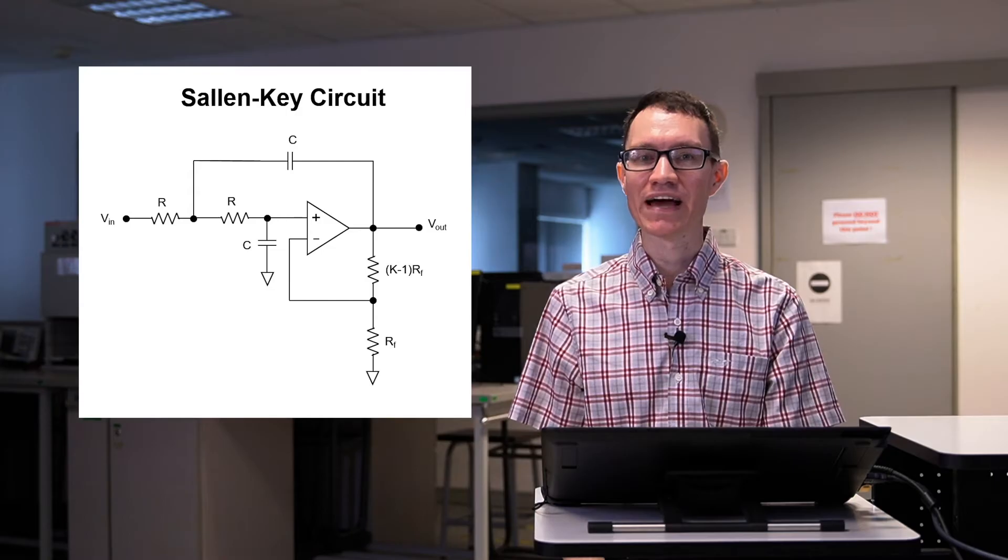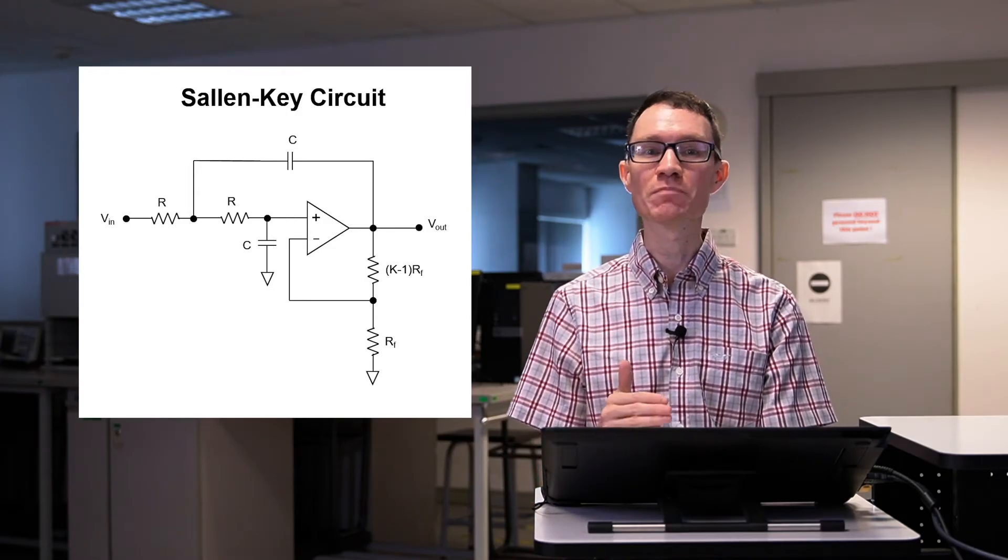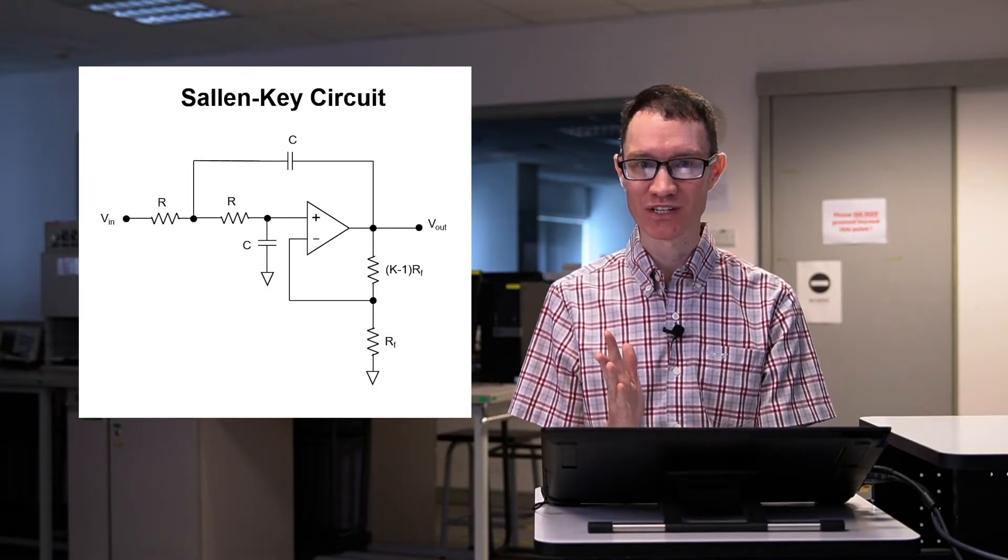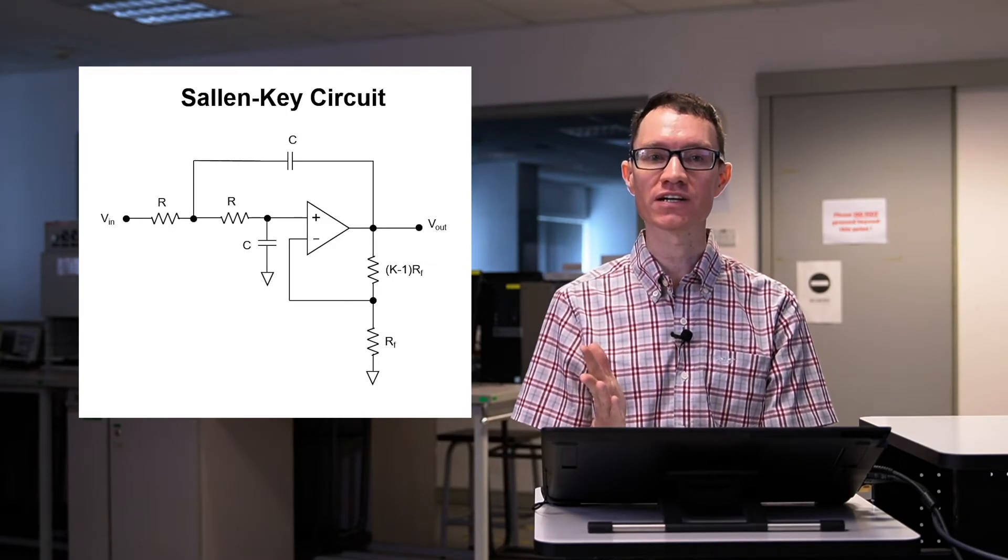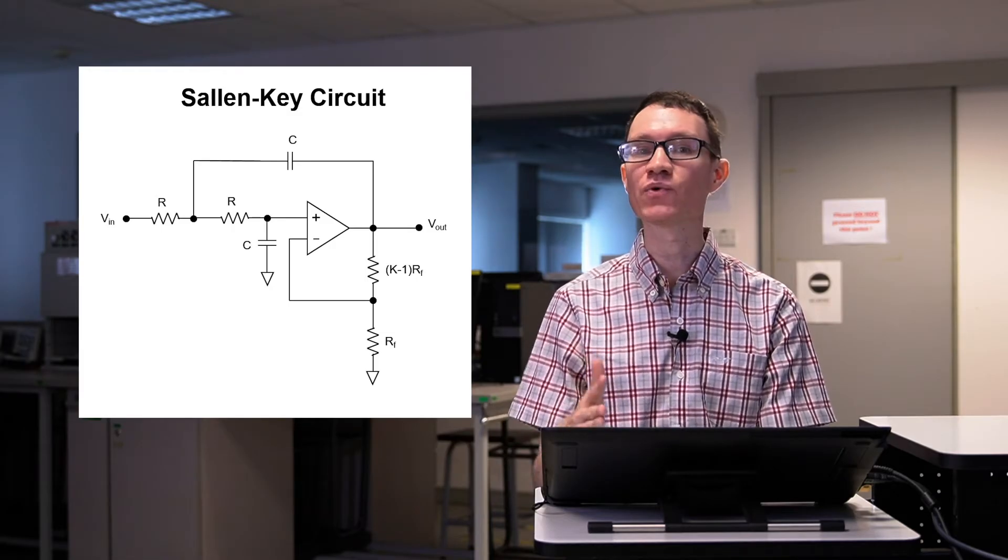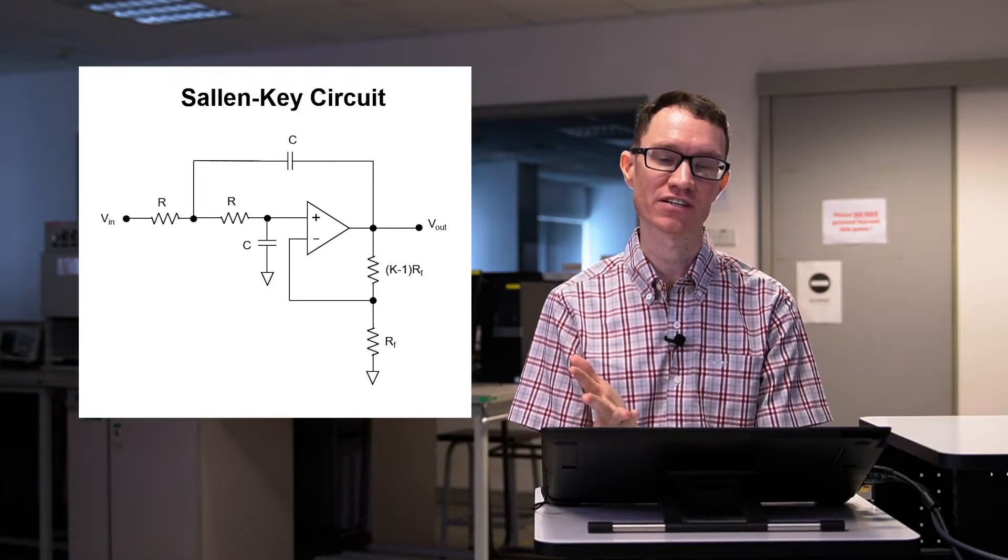The Sallen-Key circuit displayed right now is a second-order low-pass filter. It has two capacitors, so we know it has two poles. To obtain an nth-order filter, n over two circuits can be cascaded, and we have to assume that n is an even number because each Sallen-Key circuit has two capacitors in it.